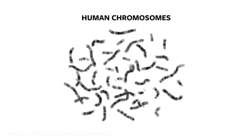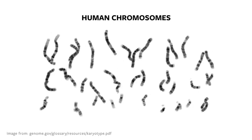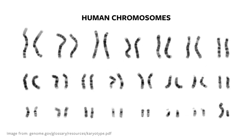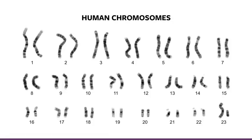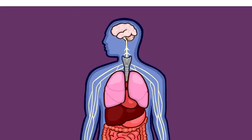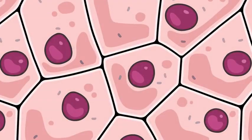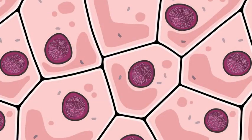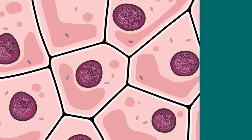Here is a photograph of an entire set of human chromosomes taken from a cell right as it was getting ready to reproduce. Your genome — the entire collection of genes that help make you who you are — is written across 23 pairs of chromosomes; that's 46 altogether. With very few exceptions, each cell in your body contains its own full copy of your chromosomes — your entire genetic code.